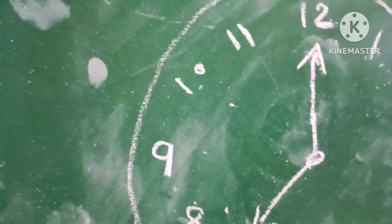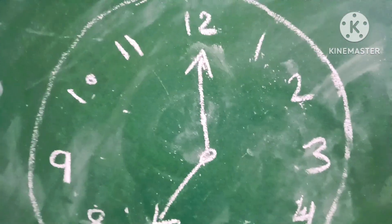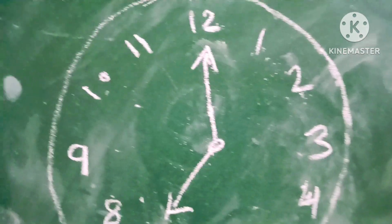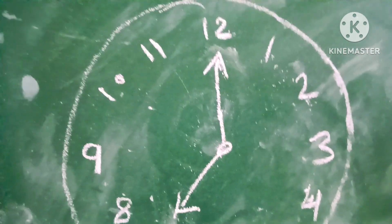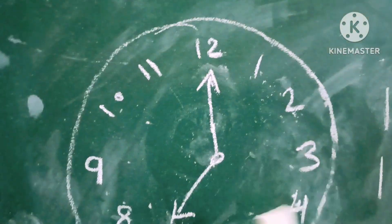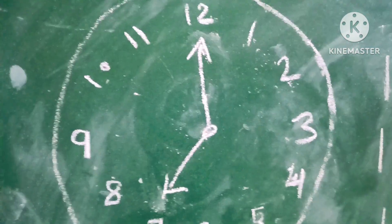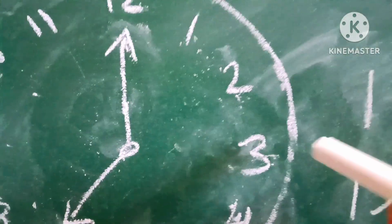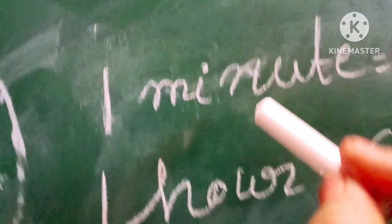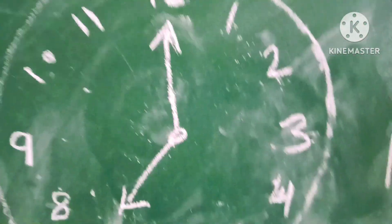Children, when the minute hand does a full rotation around the clock, that space is 60 minutes. So after 60 minutes pass, it takes us into a new hour. One minute is equal to 60 seconds. We can also see the second hand in the middle of the clock.